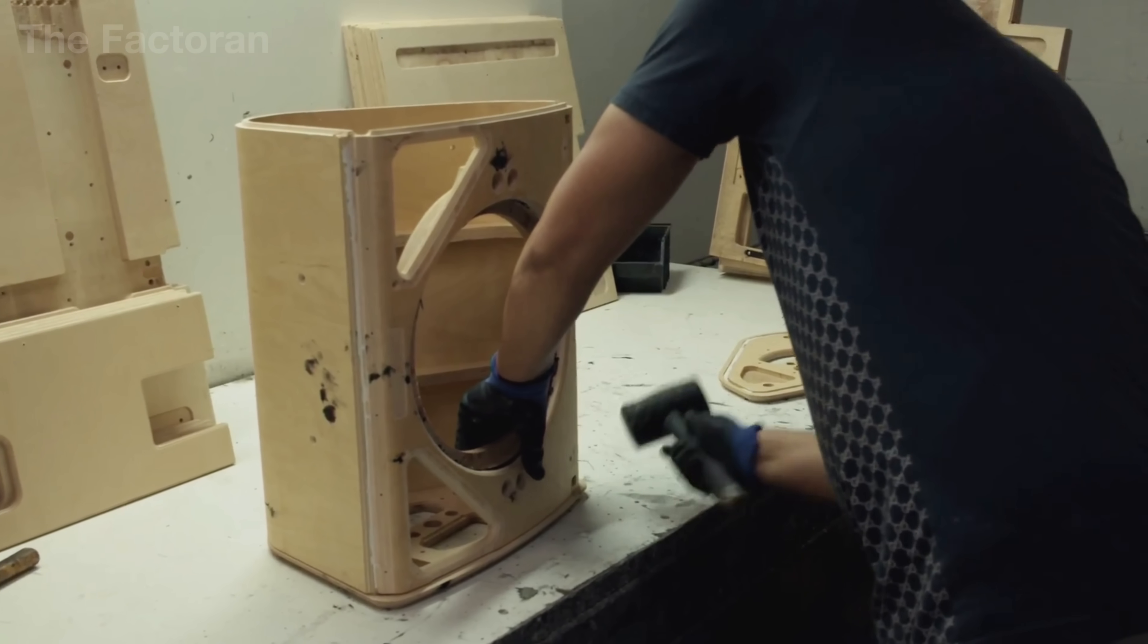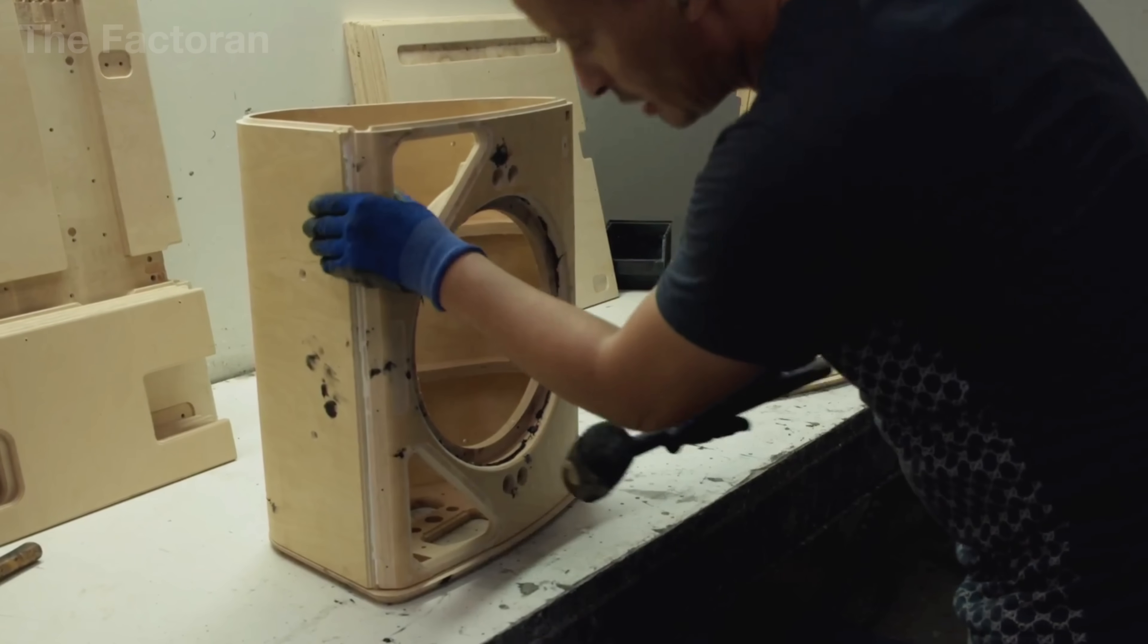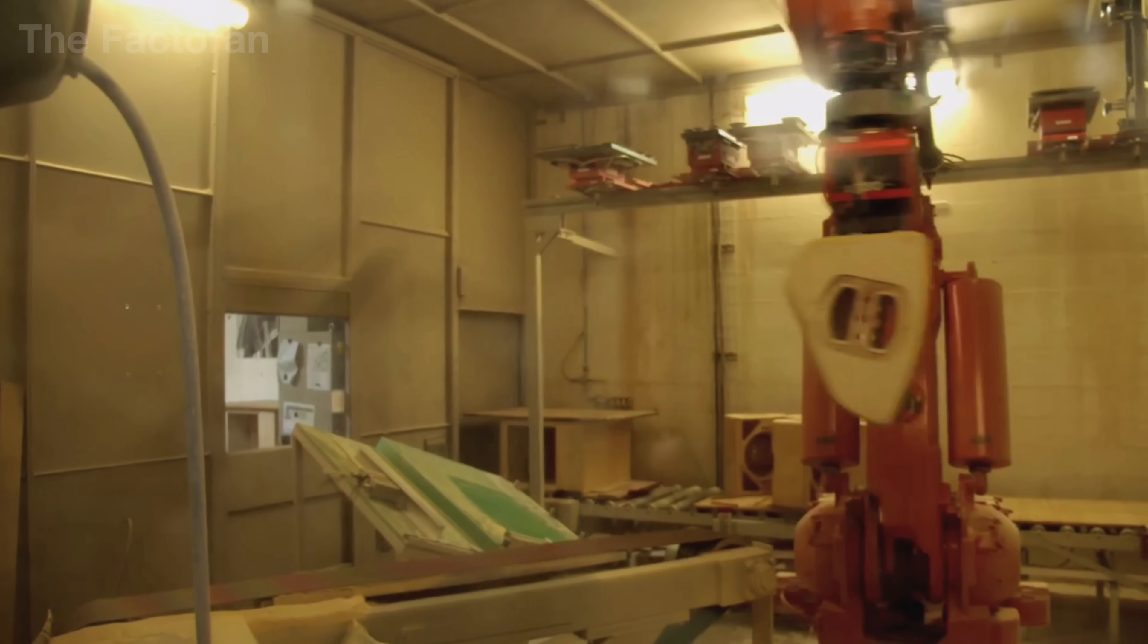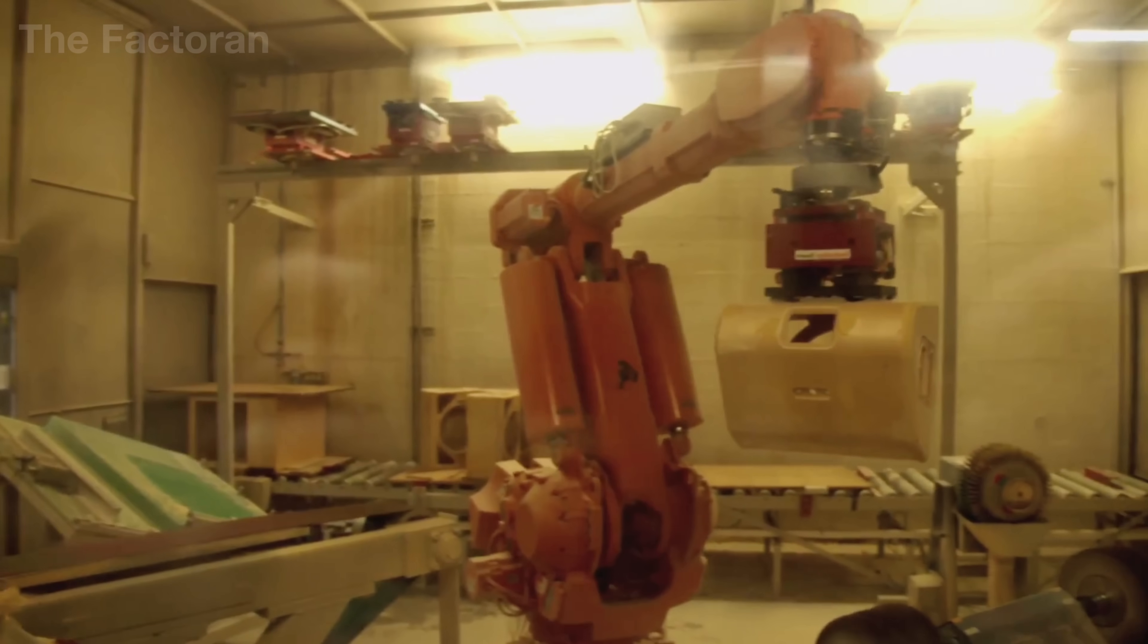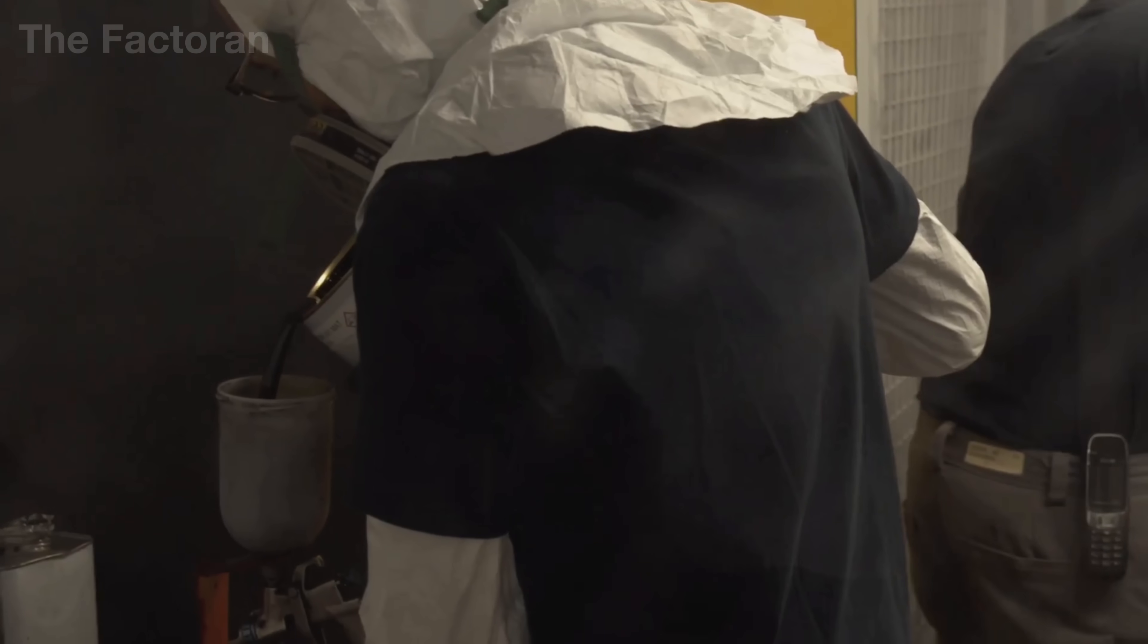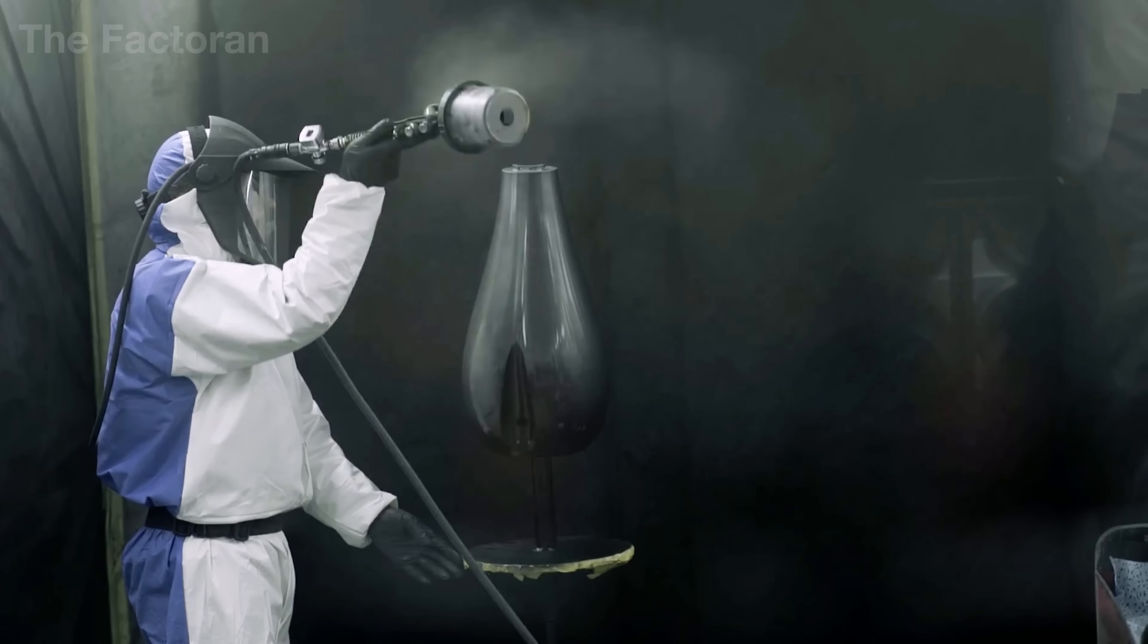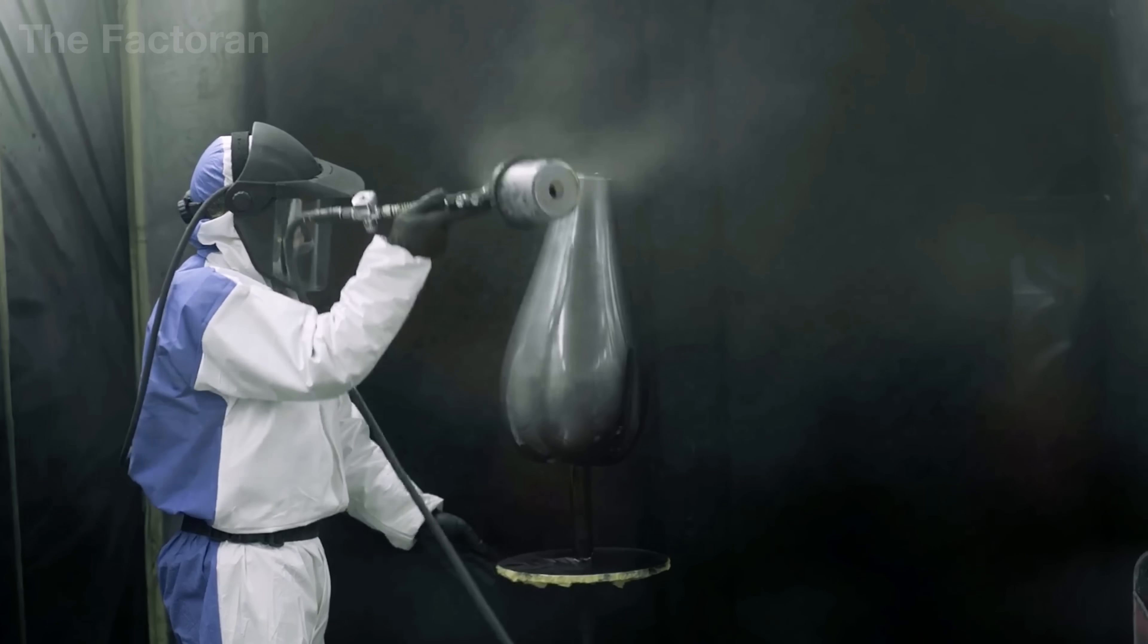Once the wooden body is structurally complete, its exterior is finished with vinyl wrap, lacquer, or acoustic fabric. This layer protects the enclosure from moisture and warping, enhances appearance, and subtly shapes surface reflection characteristics during playback.